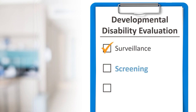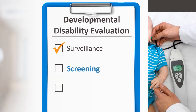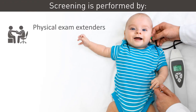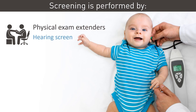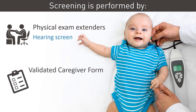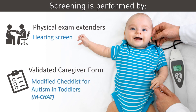Step two is screening. This is performed by physical exam extenders, such as a hearing screen in the newborn nursery, or with a validated caregiver form at preventative care visits. An example of this is the Modified Checklist for Autism in Toddlers, or MCHAT — a 20-item questionnaire utilized at 18 and 24-month preventative care visits as a screening tool for autism.